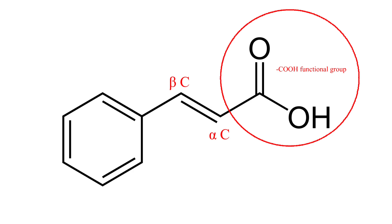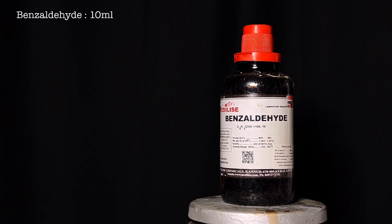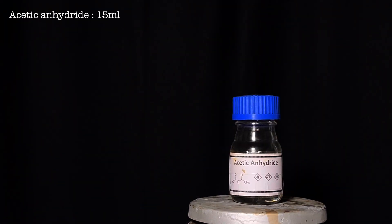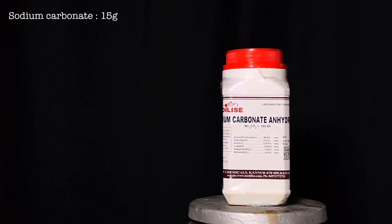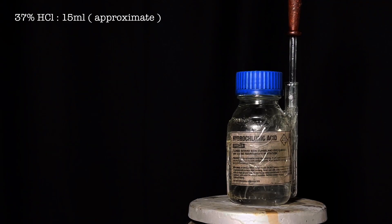For this synthesis, you will need 10 ml of benzaldehyde, 15 ml of acetic anhydride, 5 g of sodium acetate, 15 g of anhydrous sodium carbonate, and approximately 15 ml of 37% hydrochloric acid.